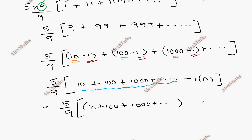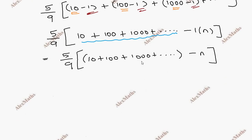So we separate this into: minus 1, minus 1, minus 1 — that is minus 1, n times, which gives minus n. And the GP part: 10 plus 100 plus 1000 plus dot dot dot up to n terms.